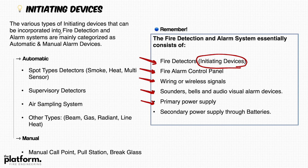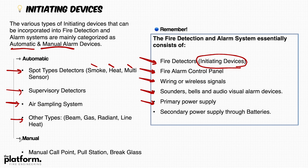The various types of initiating devices that can be incorporated into a fire detection and alarm system are mainly categorized as automatic and manual alarm devices. Automatic devices include spot type — smoke, heat, or multi-sensor — as well as supervisory detectors, air sampling, beam detectors, line heat detection, and gas detectors. Manual types include call points, pull stations, and break glass units.